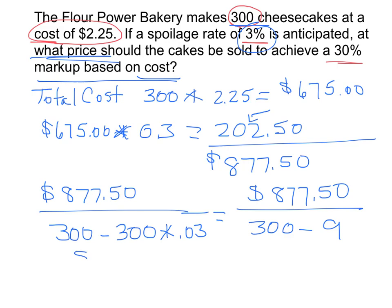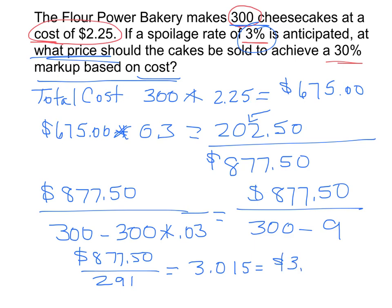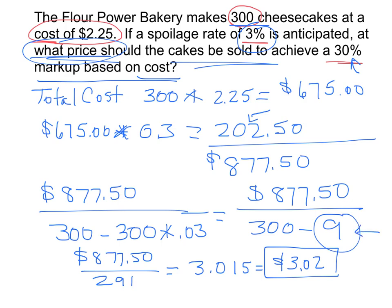So I'm going to end up with $877.50 divided by 291 cheesecakes. And if I divide that, I get 3.015, or about $3.02, which is the price the cake should be sold at to achieve this 30% markup and to account for losing 9 due to spoilage.